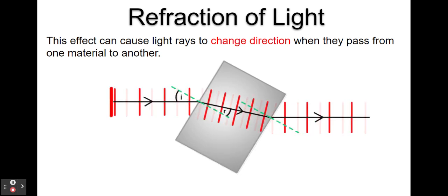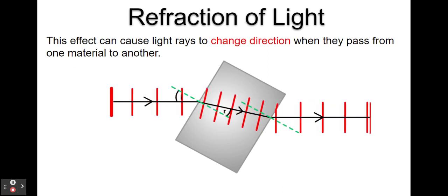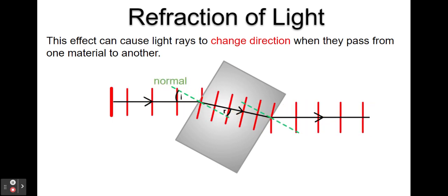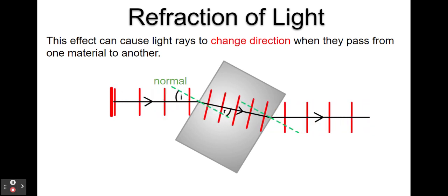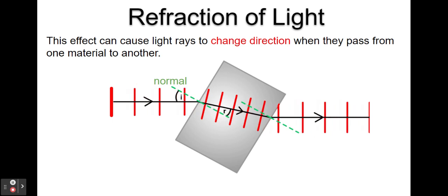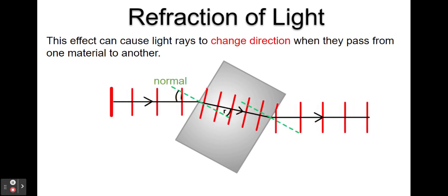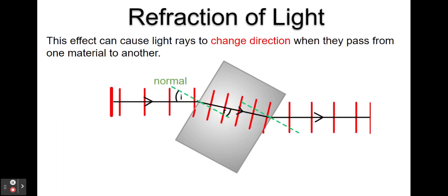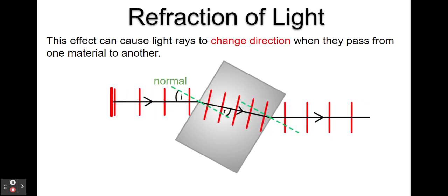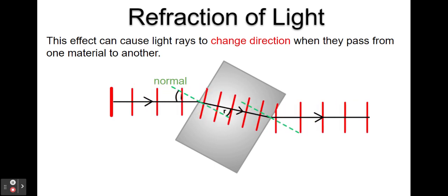Now we can do some measurements. We need to draw some lines: the black line indicates the direction the light ray is traveling. The green lines are known as the normal — a reference line always drawn perpendicular, or at 90 degrees, to the surface of the block where the light ray meets it. We always measure angles between the light ray and the normal. The angle indicated I is the angle of incidence, and the angle indicated R, after the light ray has changed direction, is called the angle of refraction.